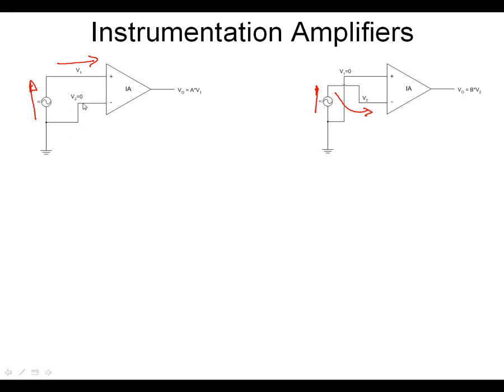If we have V2 set to ground, zero volts, and over here we have V1 set to zero volts, what we're effectively saying is the instrumentation amplifier will have a gain for one input, and we're going to call that particular gain, in this case...